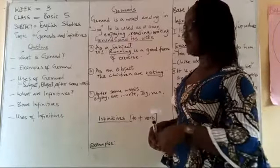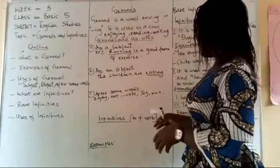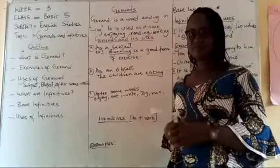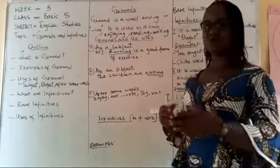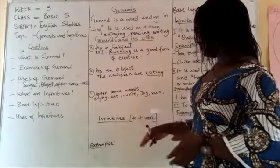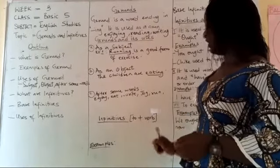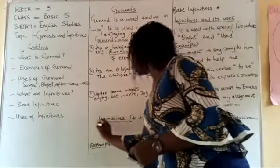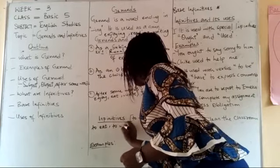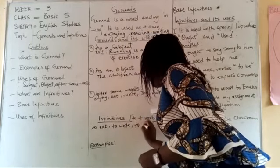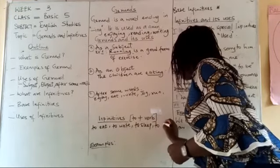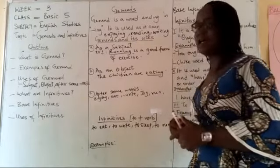Now let's quickly look at infinitives. What are infinitives? These are words that have the word 'to' before them. In infinitives, we have 'to' and a verb. For example: to eat, to write, to sleep, and to grind. All these are infinitives.